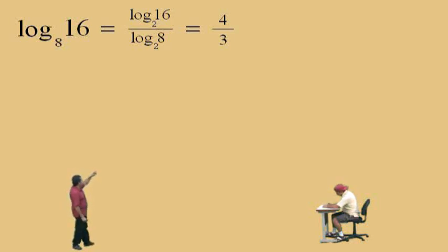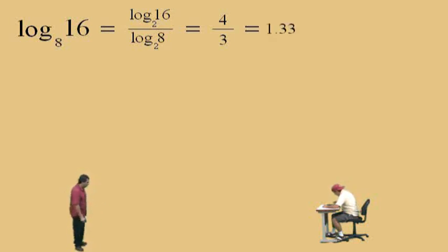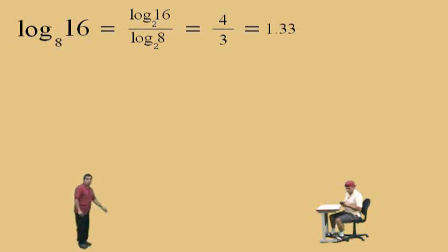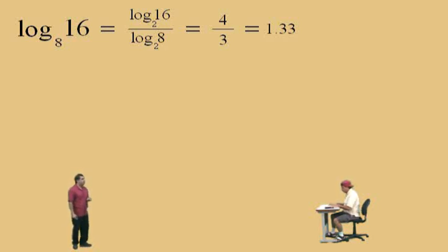Log base 2 of 16 is 4 and log base 2 of 8 is 3. If you take your calculator and do 4 divided by 3, you get 1.333. We'll round it to the nearest hundredth. If you're doing logarithms in a chemistry class, you've got to pay attention to significant figures — we'll talk about that in our next lecture.